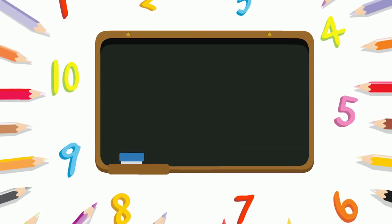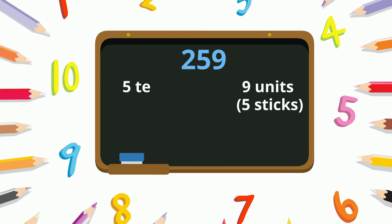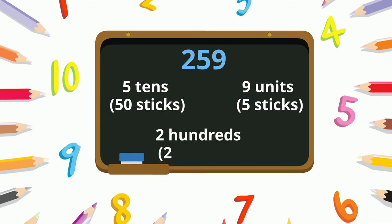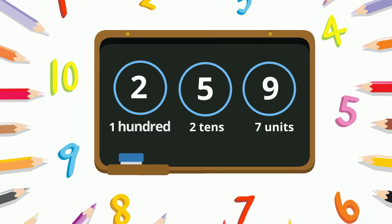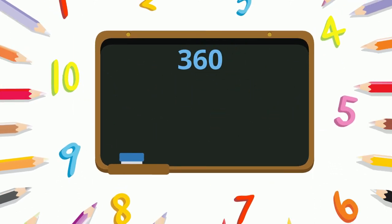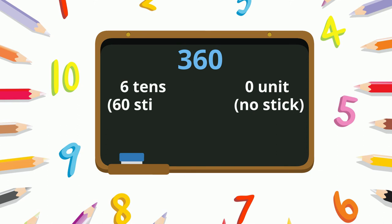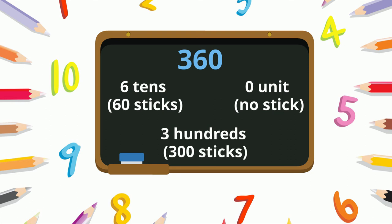Keeping the same rule in mind, let's read the value of digits in some other numbers. In the number 259, there are nine units, five tens, and two hundreds. We read the number as two hundred and fifty-nine. Similarly, in the number 366, there are six units, six tens, and three hundreds. We read the number as three hundred and sixty-six.